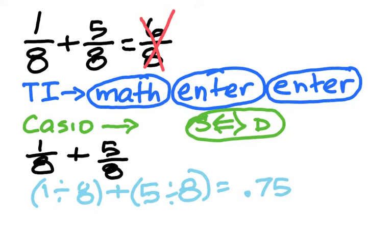Hmm. So, you're going to go up to either math, enter, enter, or S double arrow D. And that is going to turn into 3/4. Now, you're going to say, that's okay, I already knew that. And that is probably true, but let's move on to the next one and see what happens.